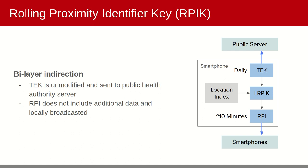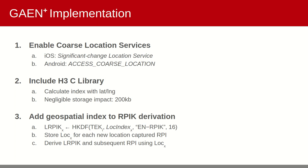We implemented GAEN Plus on Android using the reference source code on GitHub provided by Google. Effectively, we enable coarse locations, include the H3C library, and use the H3 index as the salt value to derive the RPIKs for both RPI generation and matching.